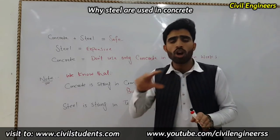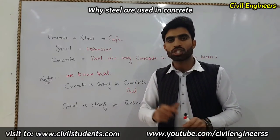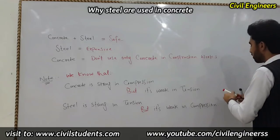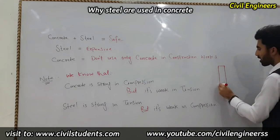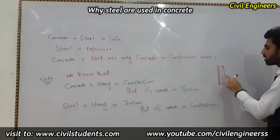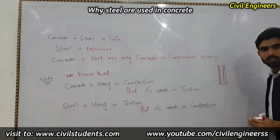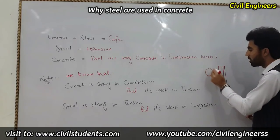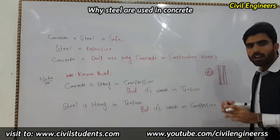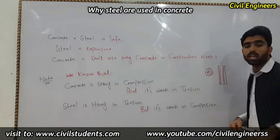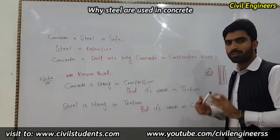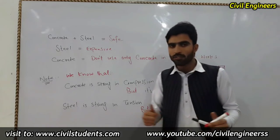Steel is weak in compression because we use a small cross-sectional area in the structure, so therefore it becomes buckling. For example, suppose this is the column and we use steel here — the area of steel is too small, so if the load comes on the steel, the area is too much small and it's not able to support the load, so therefore it becomes buckling.